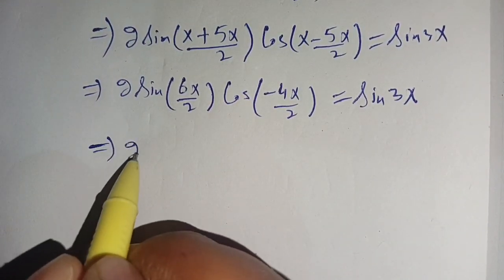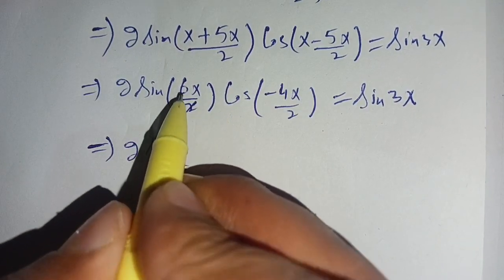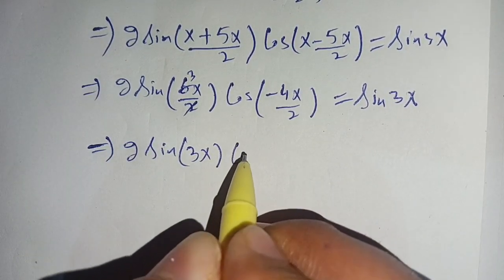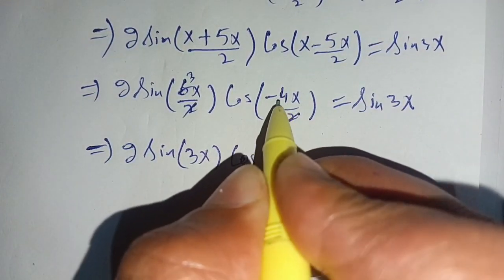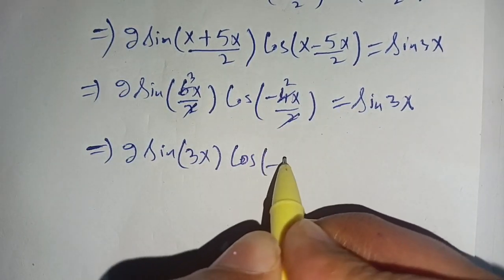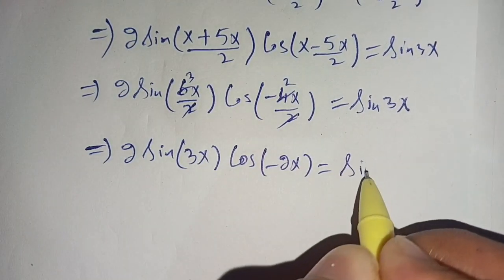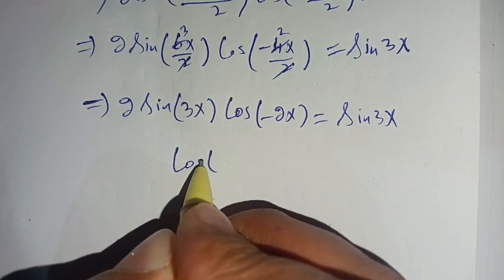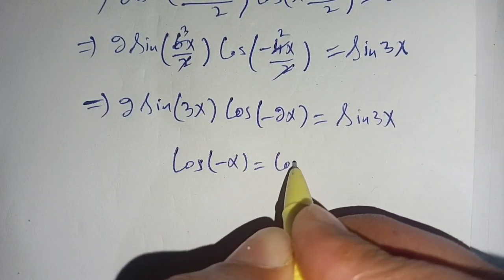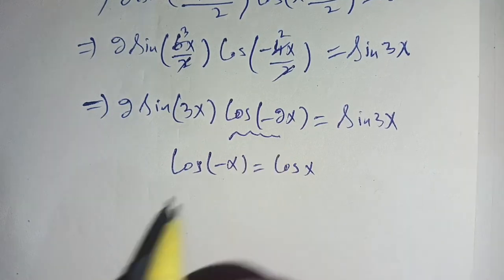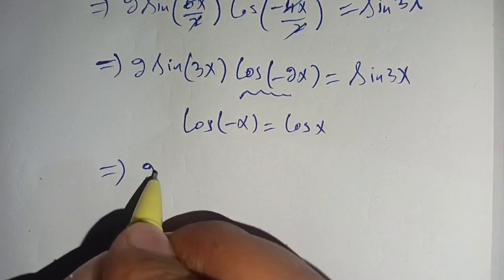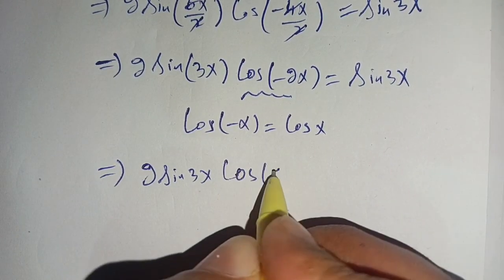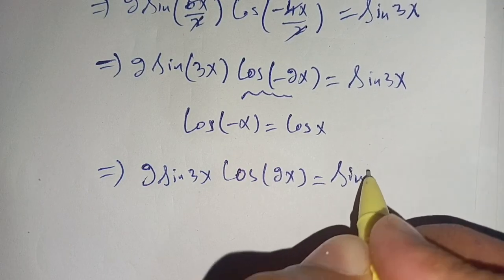This simplifies to 2·sin(3x)·cos(2x) = sin(3x). We know that cos(−x) = cos(x), so cos(−2x) = cos(2x). We can cancel sin(3x) from both sides.